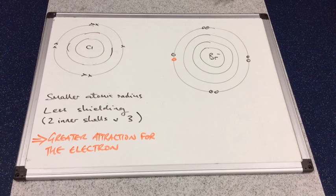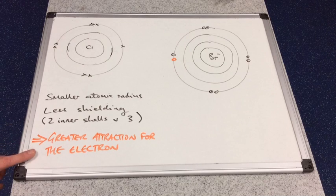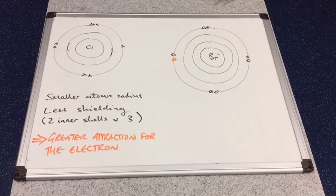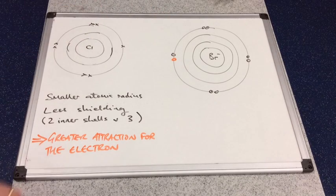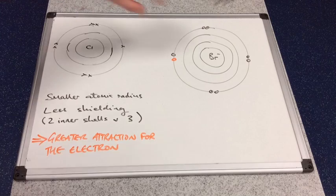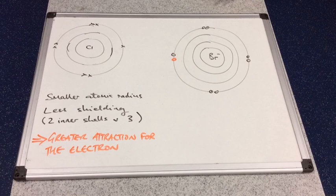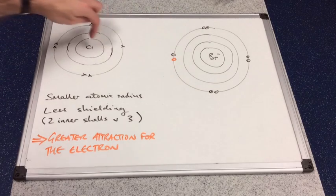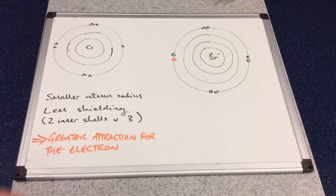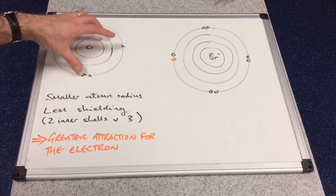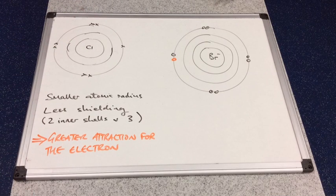And so, chlorine has a greater attraction for the electron. Chlorine can pull this electron across. That would turn into a chloride ion. That would turn into an isolated bromine atom. You get two of those together and you form your Br2 molecule. This has lost an electron, so it's been oxidized. This has accepted the electron, so it's an oxidizing agent.